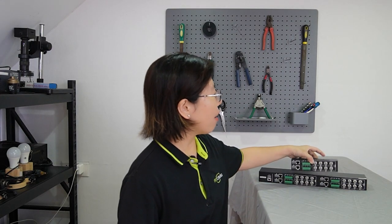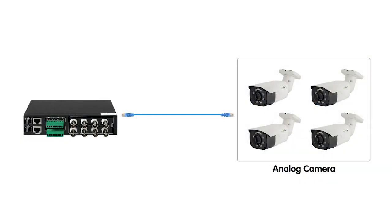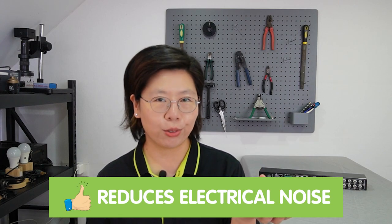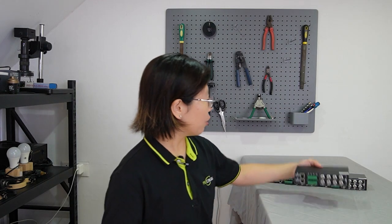Here we have our 8-channel high-definition video balun. It allows you to connect up to 4 analog cameras through a single Ethernet cable over 200 meters, saving time and money by running only one CAT5E or CAT6 cable instead of 4 RG59 cables. As a passive solution, it can operate without power, which greatly reduces electrical noise. We also have the 16-channel video balun, which enables transmission of real-time video over unshielded twisted pair UTP wire from CCTV cameras.